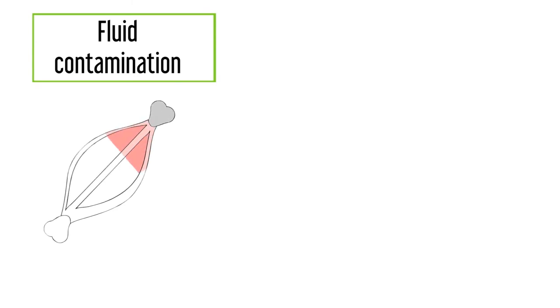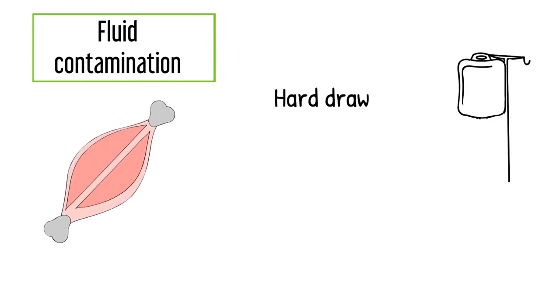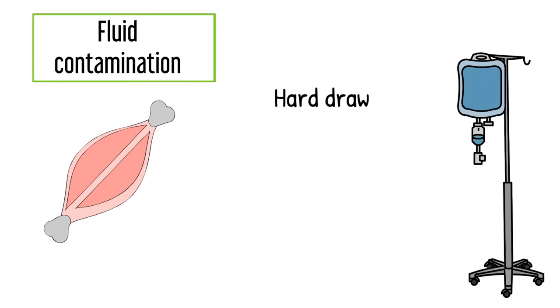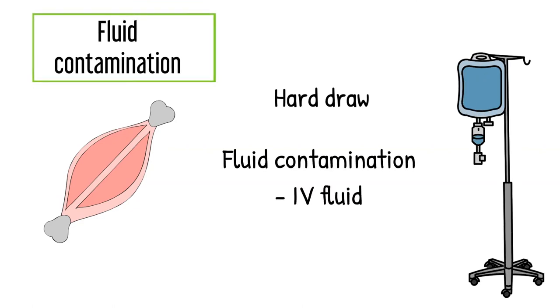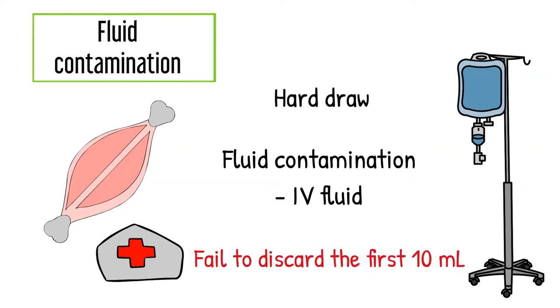Fluid contamination. Sometimes tissue fluid can contaminate a blood draw sample, especially in a hard draw. However, most fluid contamination is from IV fluid or other fluid being given to the patient at the time of draw. This can happen when the nurse collects from the line and did not discard the first 10ml. This fluid can give false negative or false positive results depending on the type of fluid. Only the nurse can collect from the line, but fluid contamination may do more harm to the patient if not collected properly.